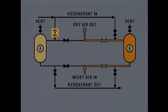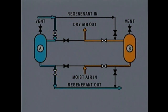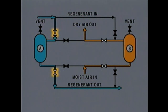Opening the regenerant inlet valve and the outlet valve allows regenerant to pass through the drying agent in dryer A. The regenerant removes the moisture from the drying agent. Once the drying agent in dryer A has been regenerated, the regenerant valves are closed.